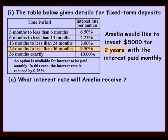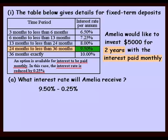Now, that's if you don't read the fine print. The fine print says an option is available for interest to be paid monthly. In this case, the interest is reduced by 0.25%. And Amelia would like the interest paid monthly. So there we have it — you must remember, with all these tables, read the fine print very carefully. So they had the 9.5%, reduced by 0.25%, which works out to be 9.25% interest.